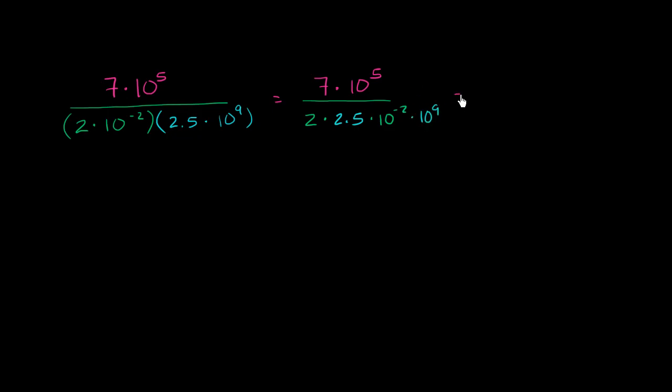And this is going to be equal to, so the numerator I haven't changed yet, 7 times 10 to the fifth over, and here in the denominator, 2 times, let me do this in a new color now, 2 times 2.5 is 5.